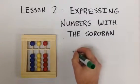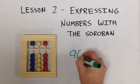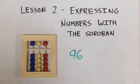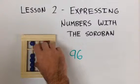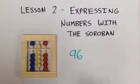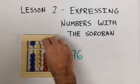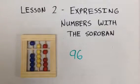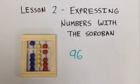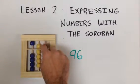Go ahead and do the number 96. Starting with our 10s, we move the 5 from the top and the 4 yellow beads from the bottom. Then go to the red column and move the 5 from the top and one red bead from the bottom. This is the number 96.